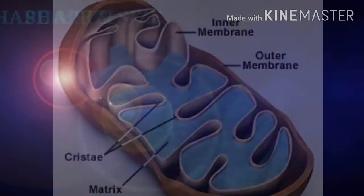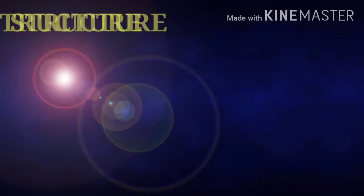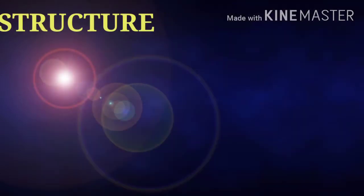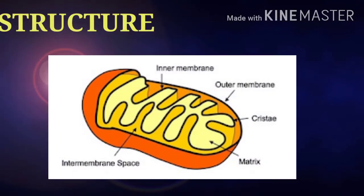Now I will talk about the structure. When viewed under the electron microscope, mitochondria appear to be bounded by a double membrane. The outer membrane and the inner membrane are separated by a 6 to 8 nanometer intermembrane space.